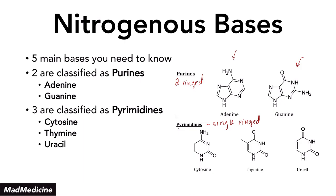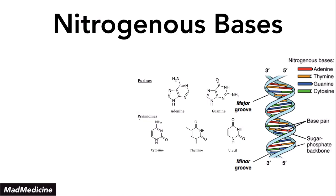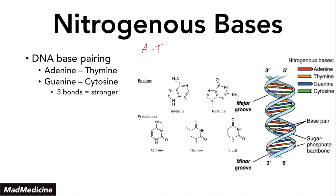Let's talk about DNA base pairing and the binding that occurs. The DNA bases are going to connect to each other, but not randomly — they connect directly to a specific purine or pyrimidine. Adenine is going to always bind to thymine, and guanine will always bind to cytosine. This is very important. With guanine and cytosine, you have three bonds, meaning any sequence that has a high level of guanine and cytosine binding sites is going to be a strong sequence.